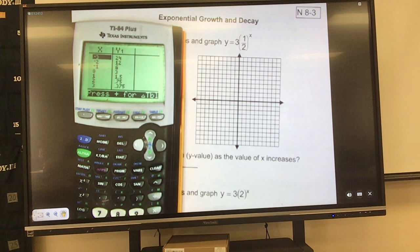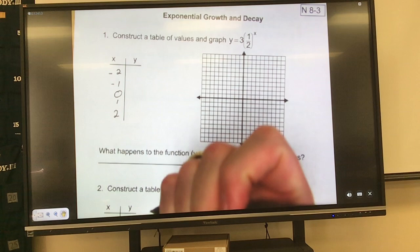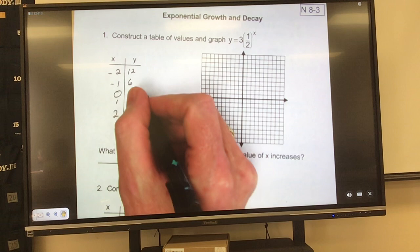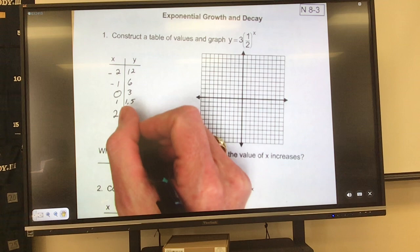And then I'm going to pre-fill these guys, or the ones that I have pre-filled, I'm going to fill them in. Negative two is 12. Negative one is six. Zero is three. One is 1.5. Two is 0.75.